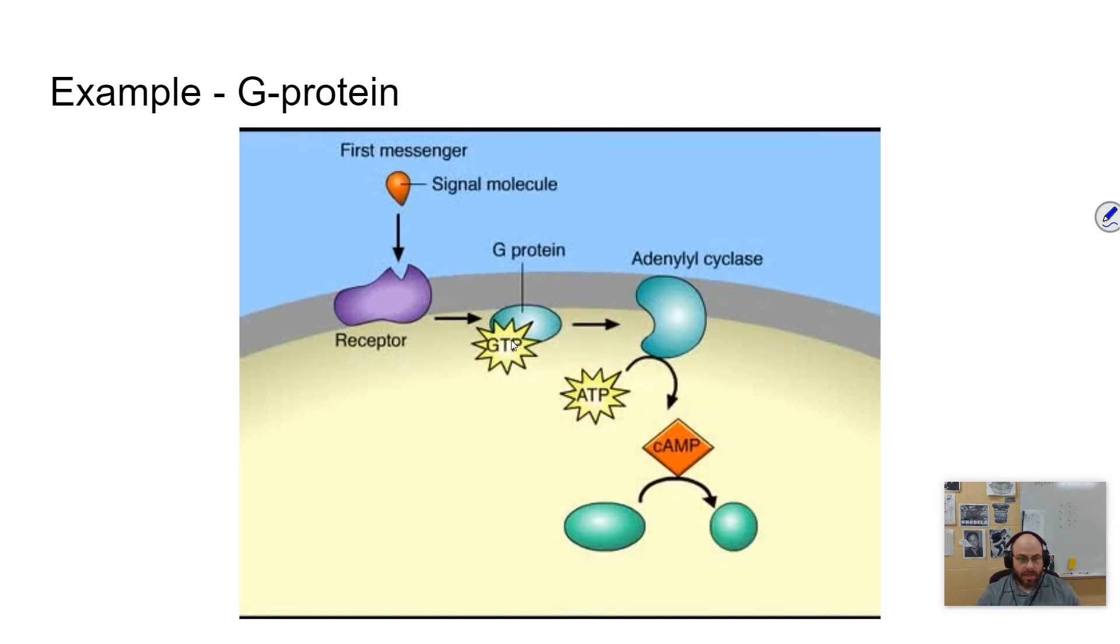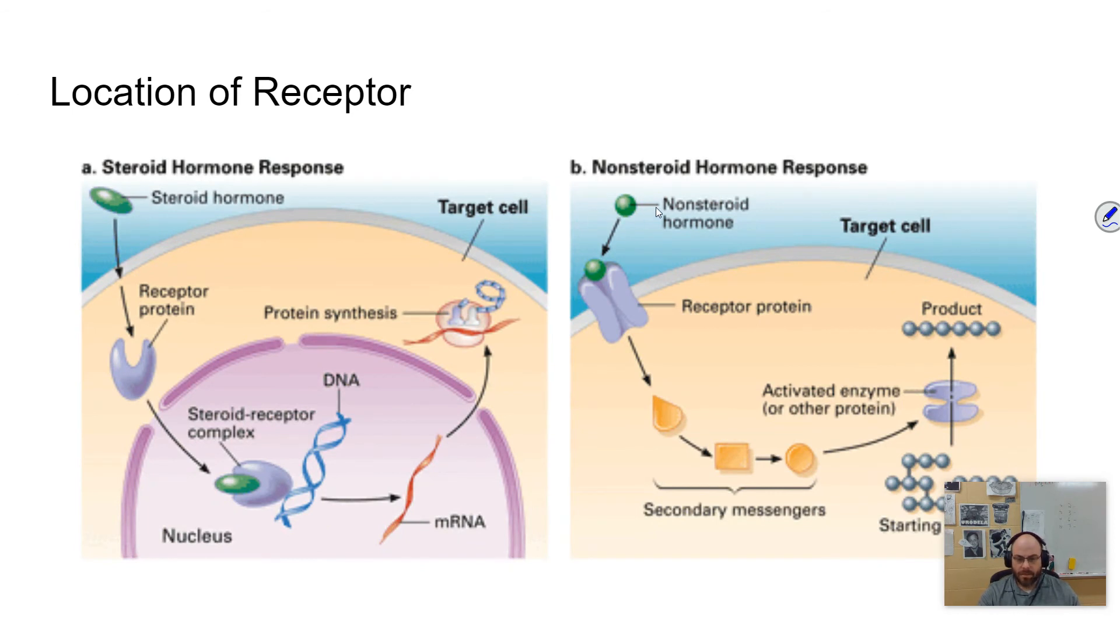Some signals are received on the cell membrane, like you see here, just like we talked about. These are typically non-steroidal type hormones. They're non-steroid, meaning they are not lipids. They're not fat soluble, and so they don't like fat. They are polar and they can't get through the cell membrane. And so they have to be received at the door, so to speak. But then there are some that are fat soluble or non-polar that can pass directly through the cell membrane. This is typically steroids and they're received on the inside of the cell rather than the outside of the cell.